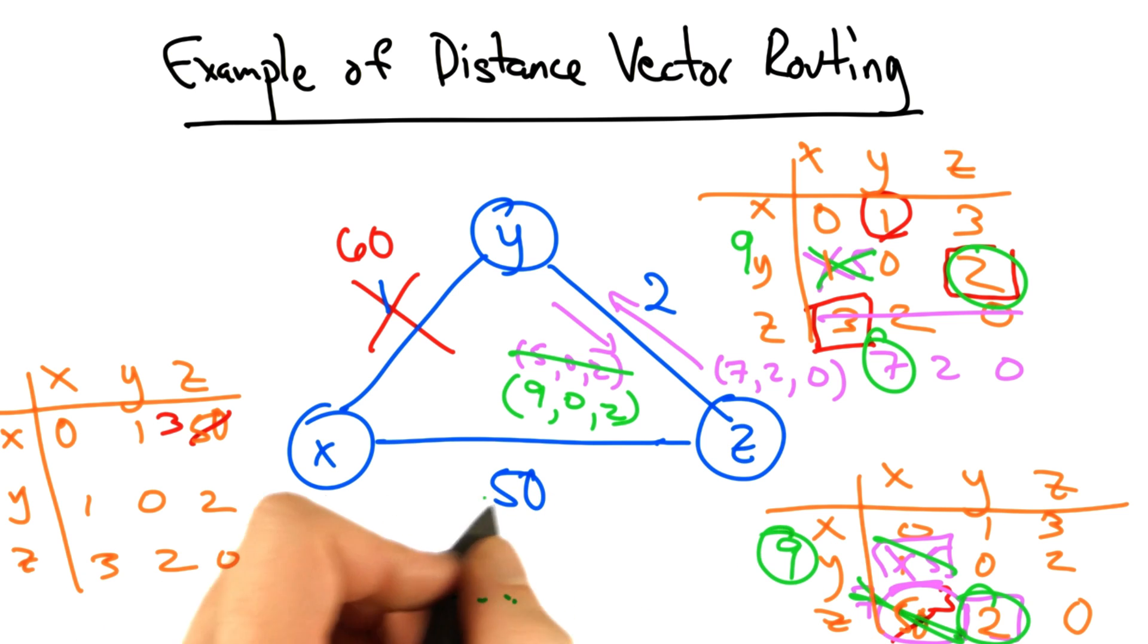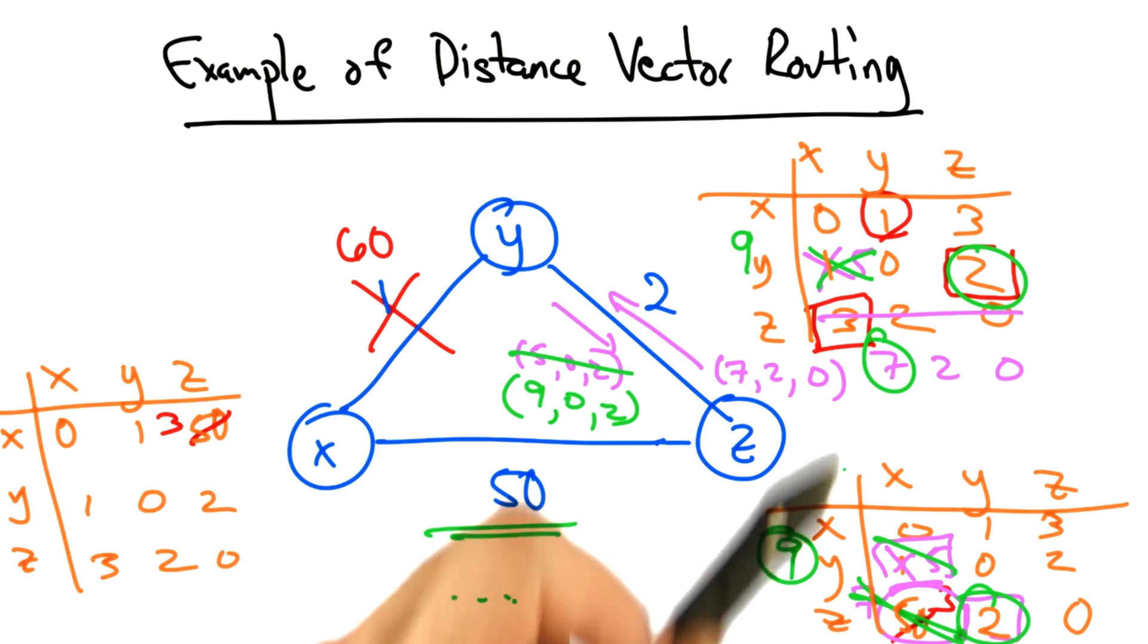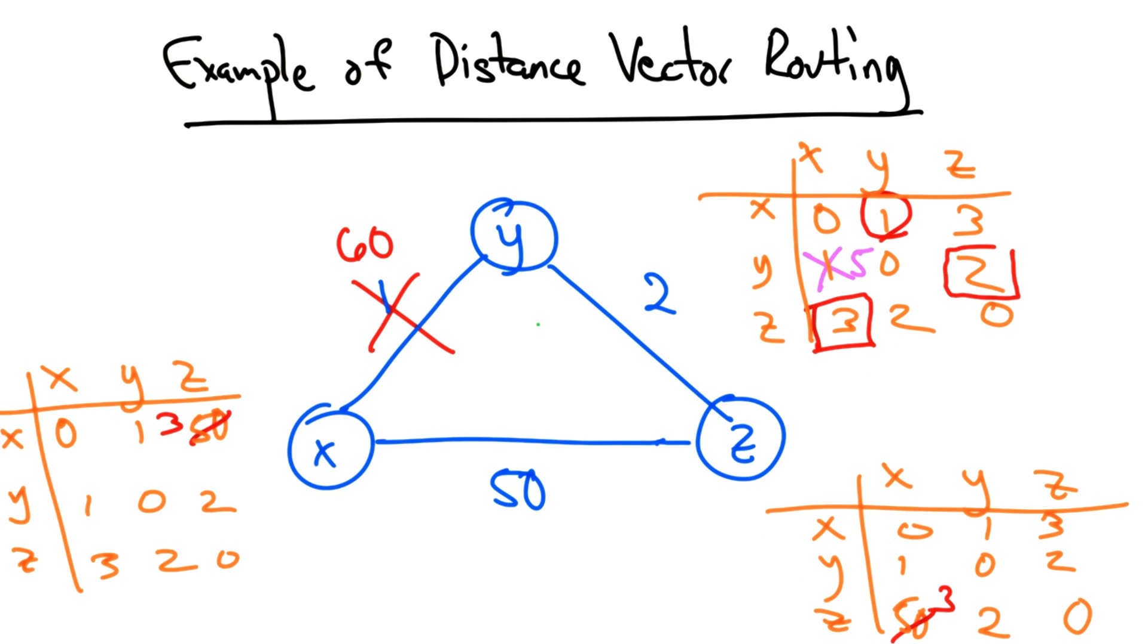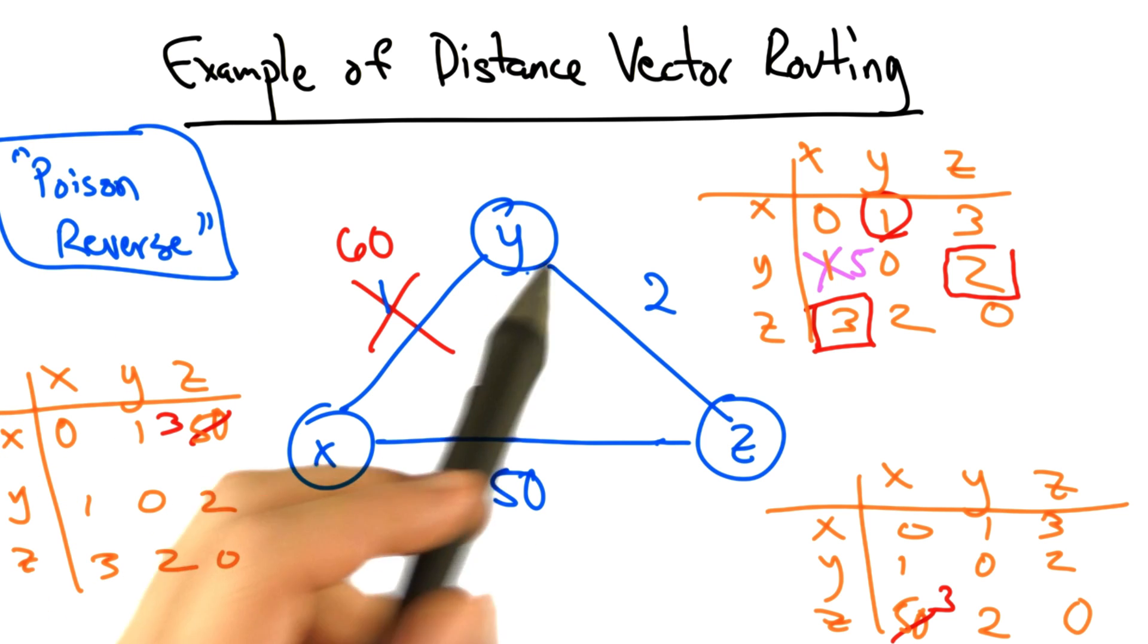Now this process repeats, of course, until z finally realizes that it has a shorter path of 50 directly through x. After this counting up process exceeds the value of 50. This problem is called the count to infinity problem. And the solution is called Poison Reverse.